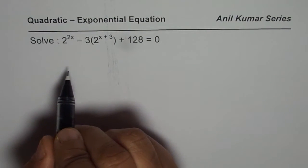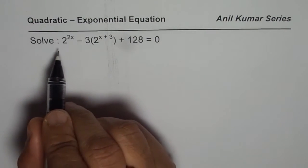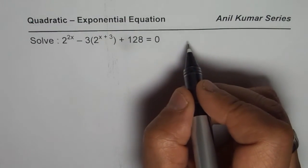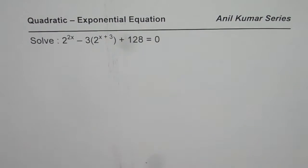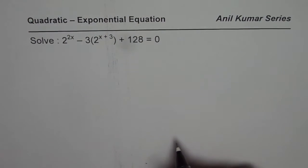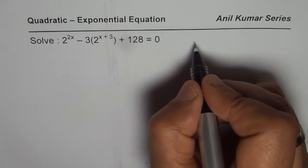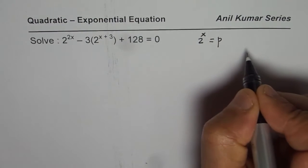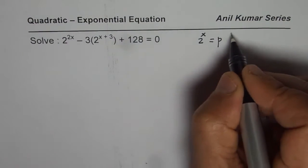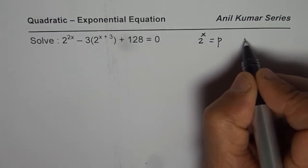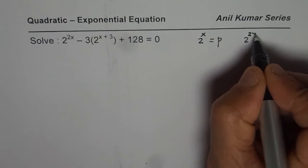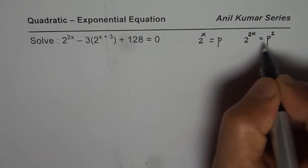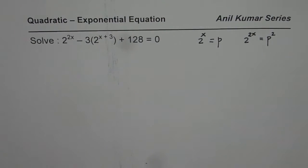Now to solve this equation we could actually substitute and then write this equation in quadratic form. I will show you how. Let us say if 2 to the power of x is equal to p then p square will be 2 to the power of 2x. So that is the kind of substitution which we are going to do to solve this equation.